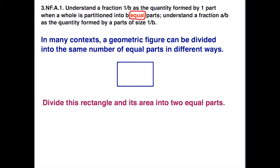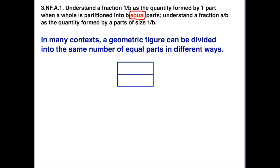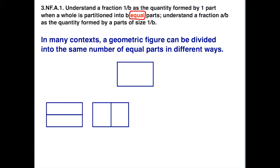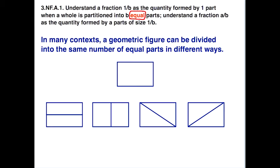Let's do an example. The task is to divide a rectangle and its area into two equal parts. Some students might divide it one way, others might do it differently. You might also have students who draw a diagonal, or a diagonal from a different vertex. Students had all kinds of options — they could have done this in four different ways — and all those equal parts don't look the same.